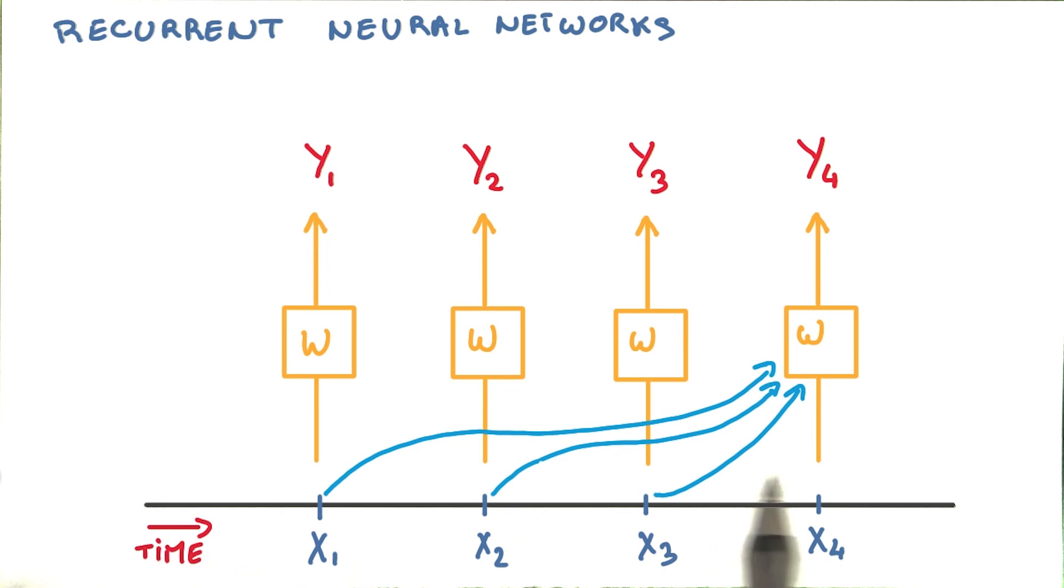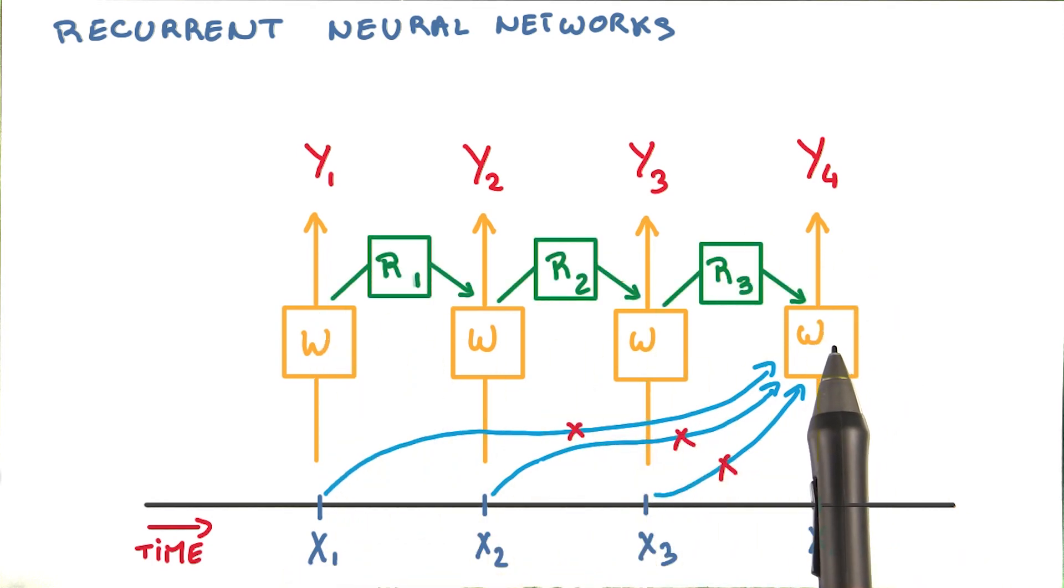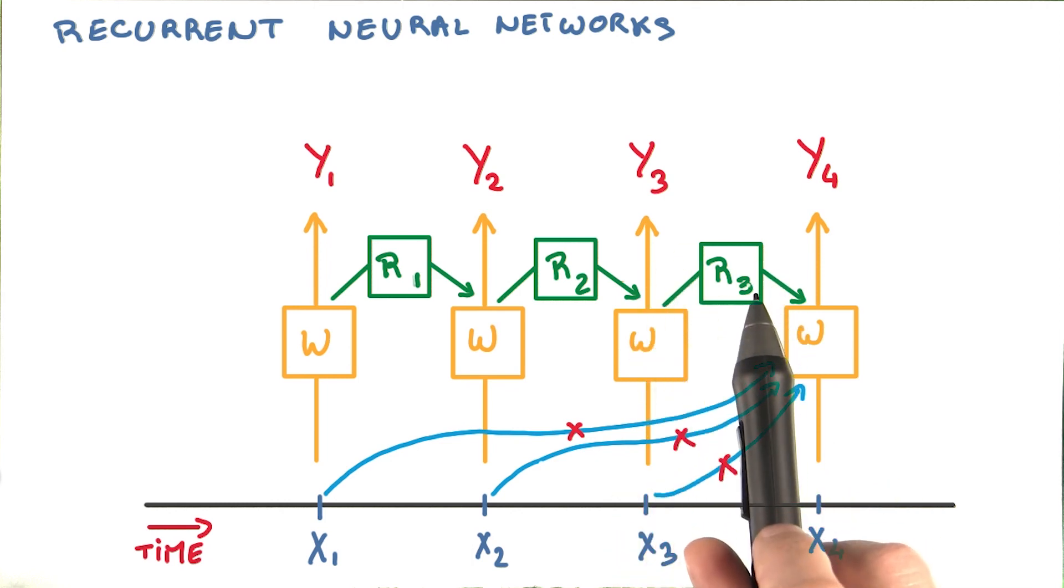But since this is a sequence, you also want to take into account the past, everything that happened before that point. One natural thing to do here is to use the state of the previous classifier as a summary of what happened before, recursively.